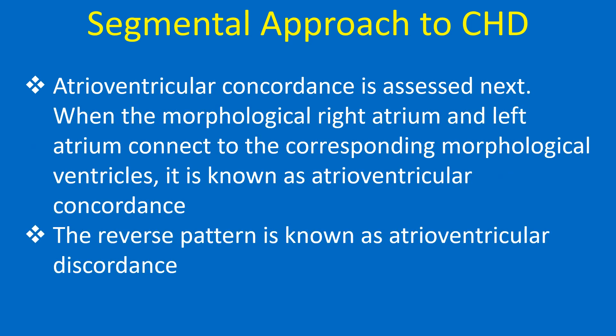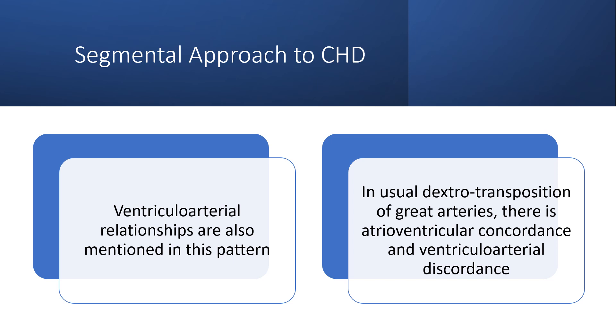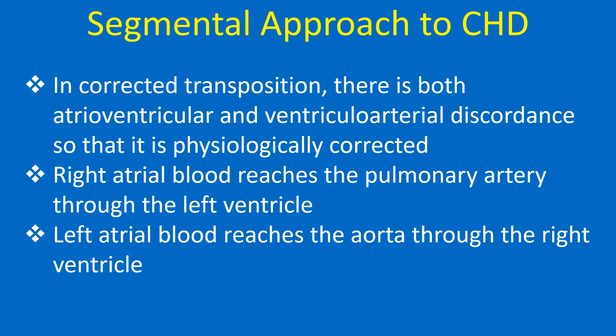Atrioventricular concordance is assessed next. When the morphological right atrium and left atrium connect to the corresponding morphological ventricles, it is known as atrioventricular concordance. The reverse pattern is known as atrioventricular discordance. Ventricular arterial relationships are also mentioned. In usual dextro-transposition of great arteries, there is atrioventricular concordance and ventricular arterial discordance. In corrected transposition, there is both atrioventricular and ventricular arterial discordance so that it is physiologically corrected — right atrial blood reaches the pulmonary artery through the left ventricle, and left atrial blood reaches the aorta through the right ventricle.